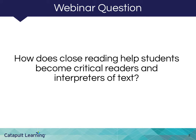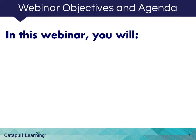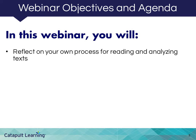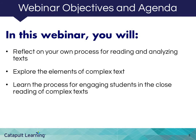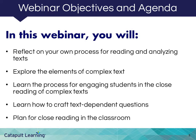Here's our umbrella question for today: How does close reading help students become critical readers and interpreters of text? Because we always want to reflect and improve upon our own processes, we'll explore the following strategies. First, we will reflect on your process for reading and analyzing text. Next, we will explore the elements of complex text. Then, we will learn the process for engaging students in the close reading of complex texts. After that, we will learn how to craft text-dependent questions. Finally, we will plan for close reading in the classroom and help students to become critical readers and interpreters of text.